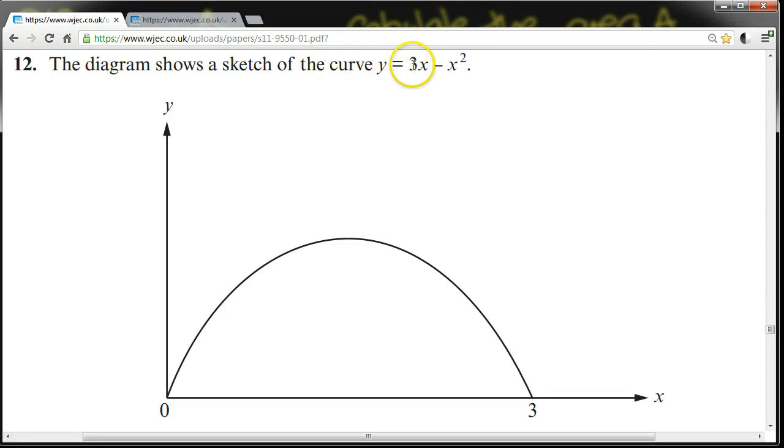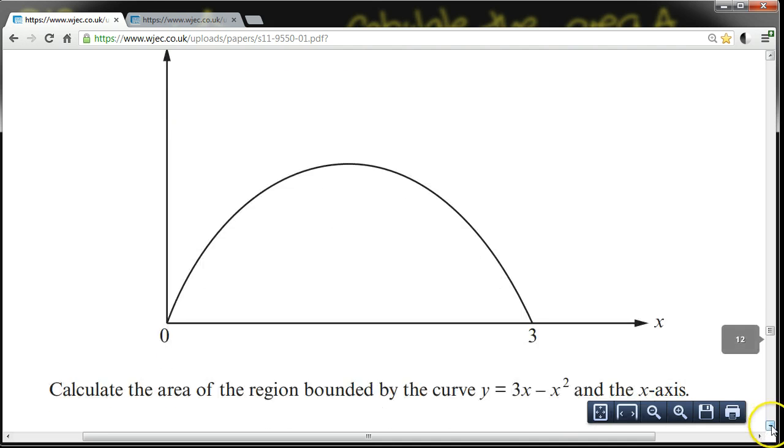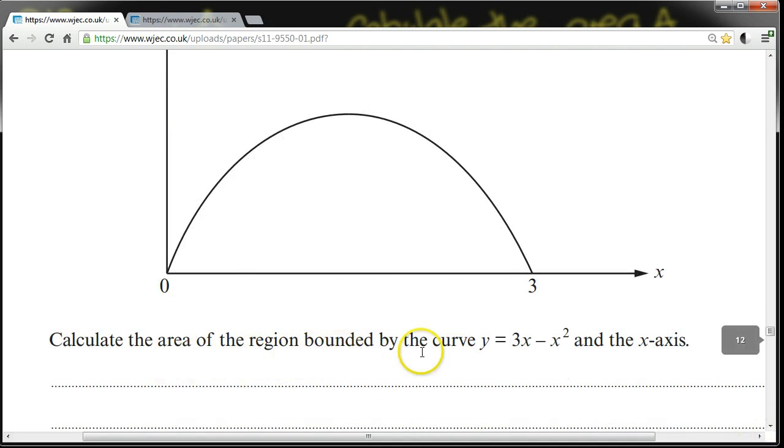The diagram shows the sketch of the curve y equals 3x minus x squared. Calculate the area of the region bounded by the curve and the x-axis.